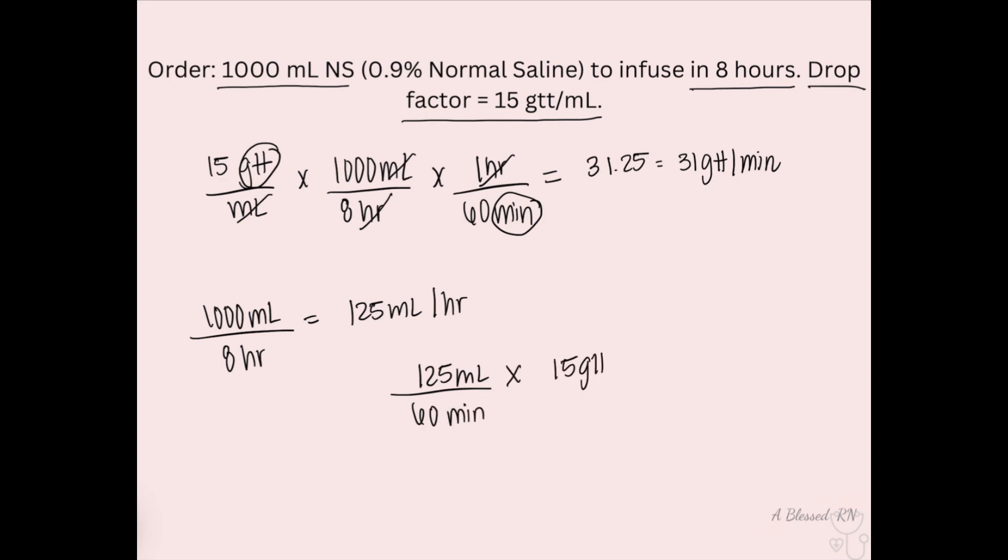You see that your units will cross out your mLs. Boom, boom. So you're left with drops over minutes and you multiply across the top, divide across the bottom, and then you're left with the same answer.